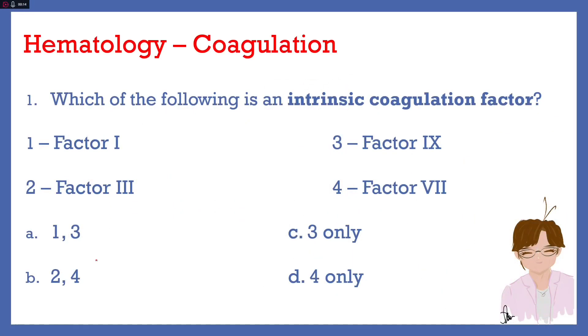Number one. Which of the following is an intrinsic coagulation factor? 1. Factor 1. 2. Factor 3. 3. Factor 9. 4. Factor 7. A. 1, 3. B. 2, 4. C. 3 only. Or D. 4 only.